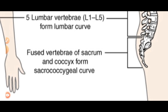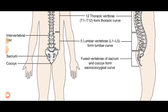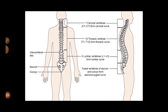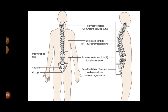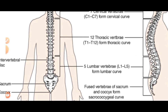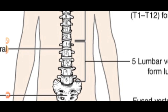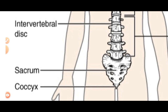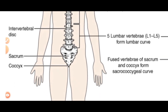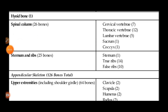The fused vertebrae of sacrum and coccyx form the sacrococcygeal curvature. The intervertebral disc is a cushion-like structure between two vertebrae. The end portions are the sacrum and coccyx. So are you understanding about the spine structure — a spinal column which is made up of 26 bones?